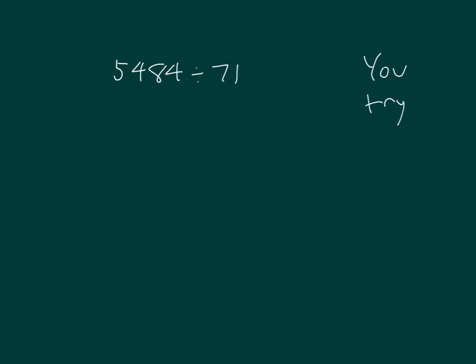You try one. 5,484 divided by 71. Give me an estimated quotient. Probably look at 70. And then we would be looking to see an estimated whole that's an easy multiple of 70. Did you choose 5,600?